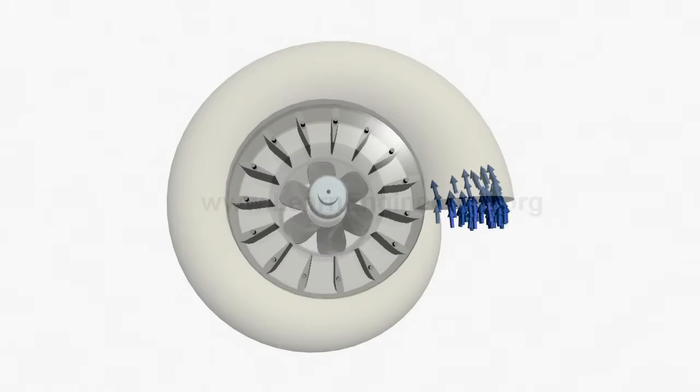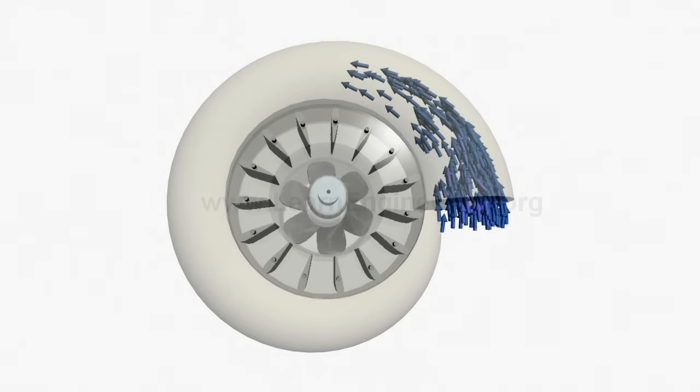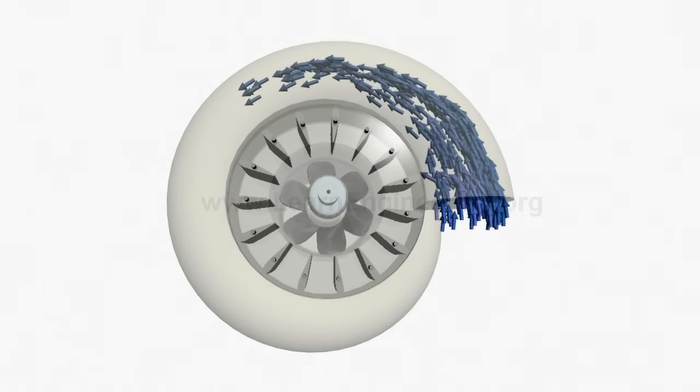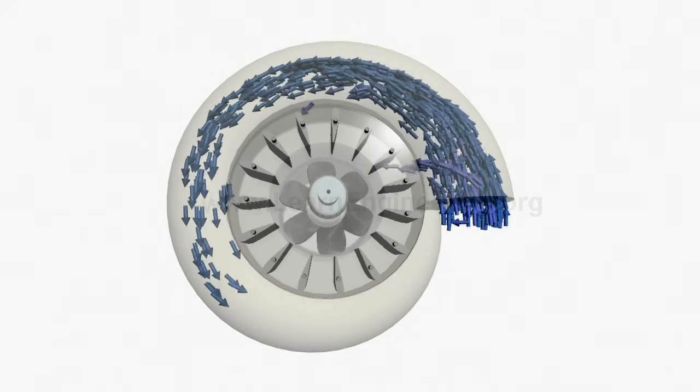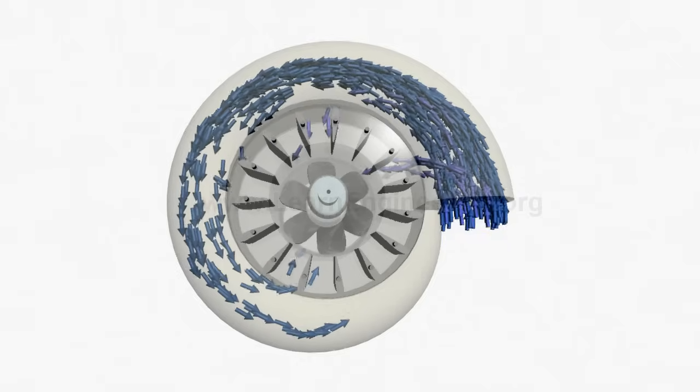In Kaplan turbine, flow is entered through a spiral casing. Decreasing area of casing makes sure that flow enters to the central portion almost at uniform velocity throughout the perimeter.